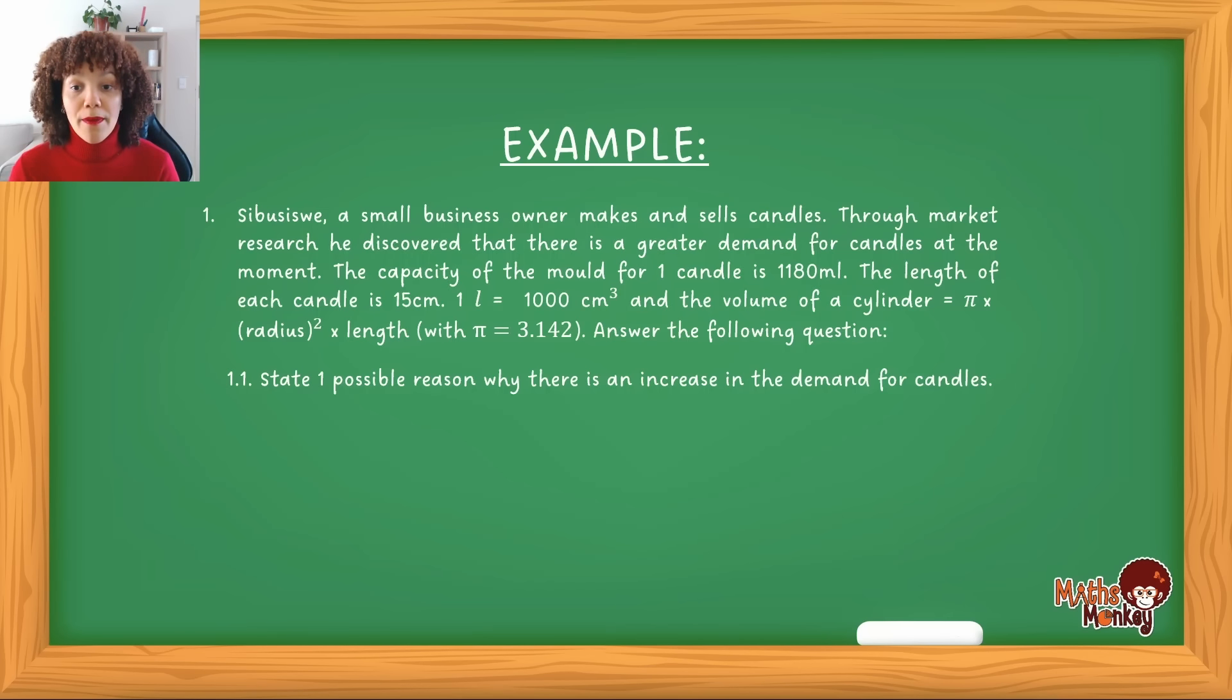The length of each candle is 15 centimeters. So from the bottom to the top, essentially the height of that candle is 15 centimeters. Then the conversion is given, which I explained in the previous example. One liter is equal to 1000 centimeters cubed.